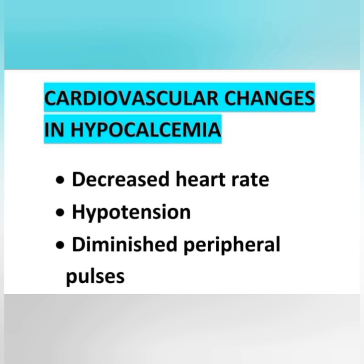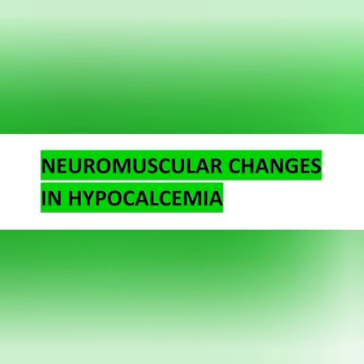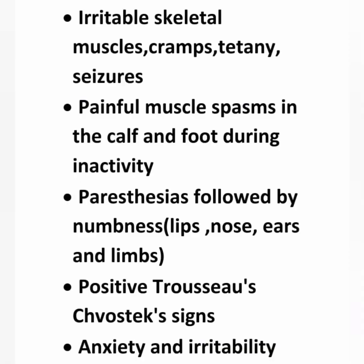In hypocalcemia, cardiovascular changes include decreased heart rate, hypotension — decreased BP — and diminished peripheral pulse. Neuromuscular changes in hypocalcemia include irritable skeletal muscles, cramps, tetany, and Chvostek sign. Tetany means involuntary muscle contraction that leads to painful muscle cramps.